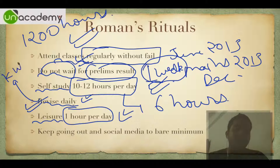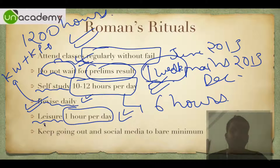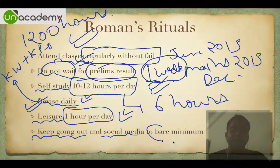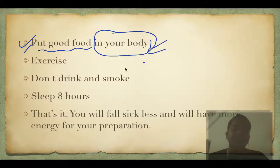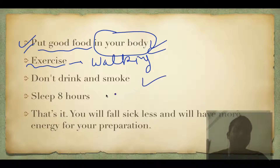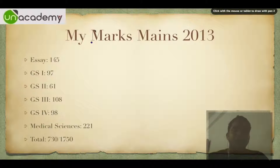Have a leisure hour of one hour per day - that is extremely important. You can break it into 15-minute segments four times, or 10-minute breaks - it doesn't really matter, as long as you are unwinding. Keep outings and social media to an absolute bare minimum. Put good food in your body, exercise - which just means walking. Don't drink or smoke, sleep for 8 hours, and you won't fall sick.